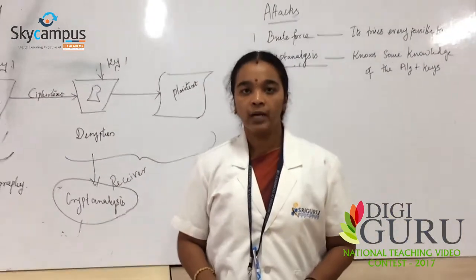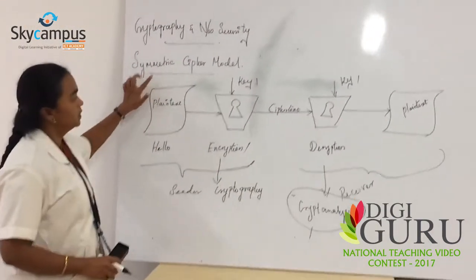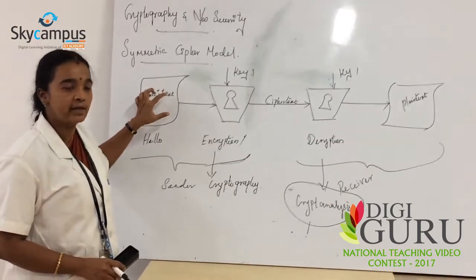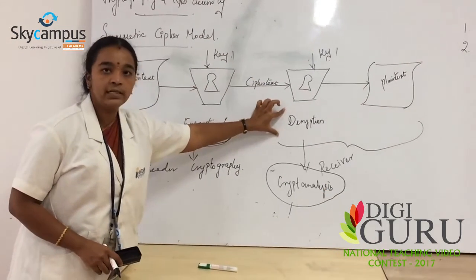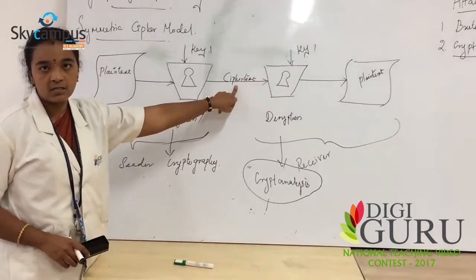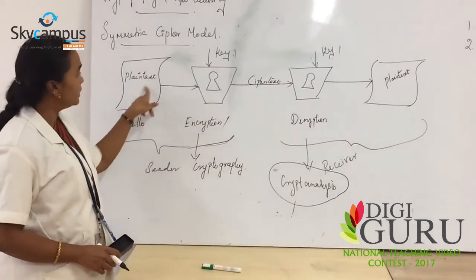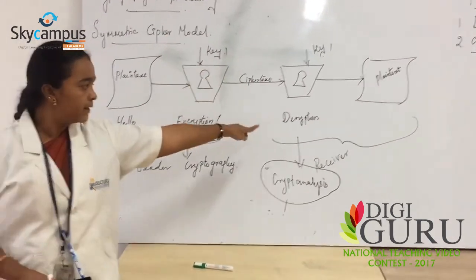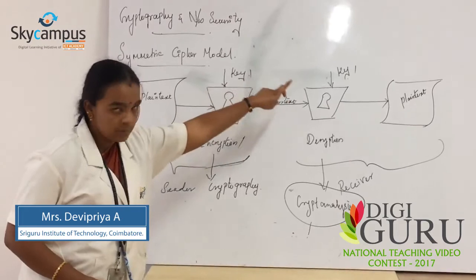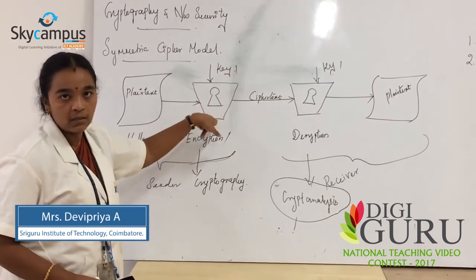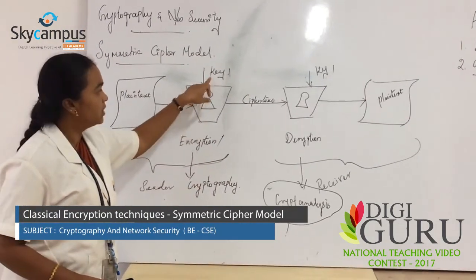The Symmetric Cipher Model has five basic components: Plaintext, Encryption Algorithm, Key, Decryption Algorithm, and Ciphertext. The main function of encryption is converting the Plaintext to Ciphertext with the help of a Key. Both sides use the same key — not different keys. The Symmetric Cipher Model contains the same key on the encryption side as well as the decryption side.